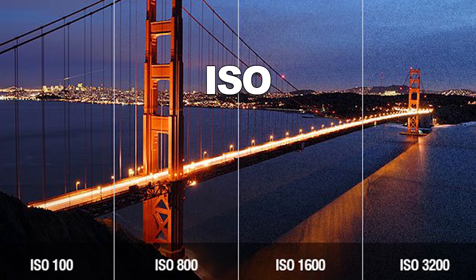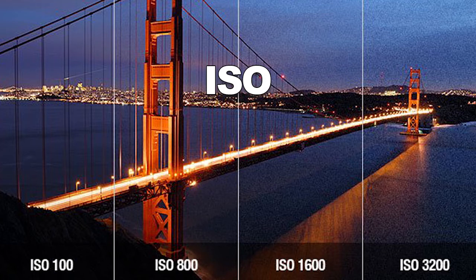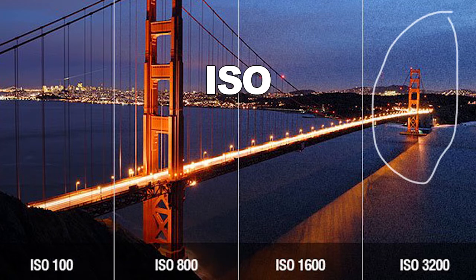ISO is the sensitivity of your sensor within the camera. We're going to go into that more deeply, but for now just know that if your ISO is set too high, your photographs will contain noise — an unsightly snowy overlay made up of artifacts from light particles.